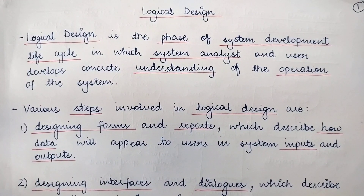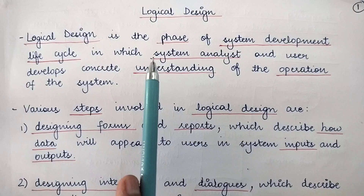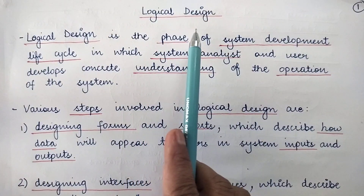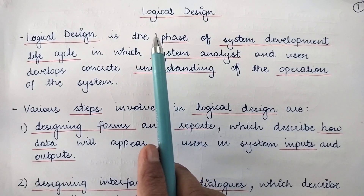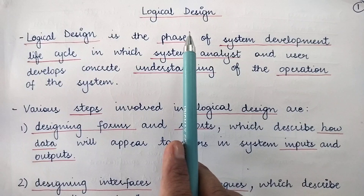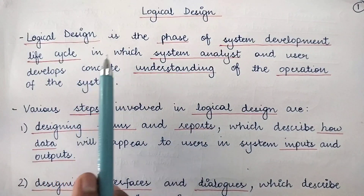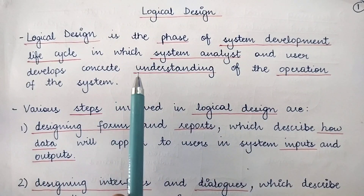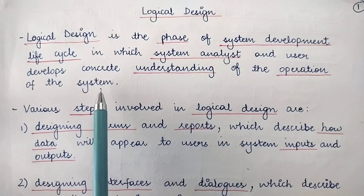Today we are going to study the logical design in system analysis and design. The design process is divided into two phases: logical design and physical design. Logical design is the phase of the system development life cycle in which the system analyst and user develop a concrete understanding of the operation of the system — basically, we are concerned with the logics.